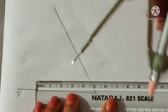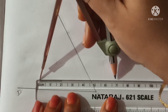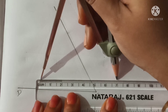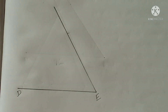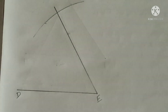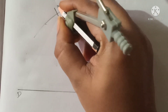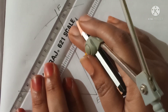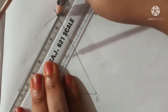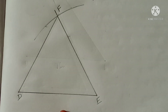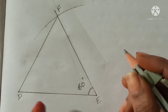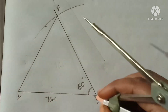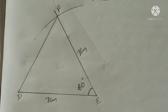Take a compass and measure a radius of 7 centimeters. Place the compass at point E and draw an arc. This arc cuts the line at point F. Now join F and D. The required triangle DEF is formed, where angle E is 60 degrees, DE is 7 centimeters, and EF is 7 centimeters.